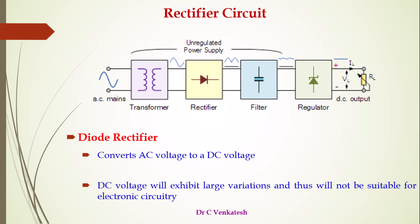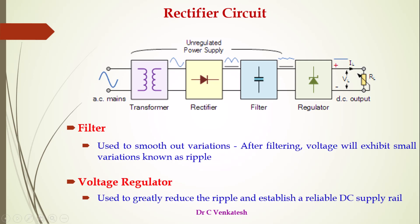That step-down voltage is connected to the rectifier circuit. The rectifier is mainly designed using a diode, and it converts alternating current AC to a DC voltage. The DC voltage will exhibit large variations and thus will not be suitable for electronic circuitry. The rectifier output is given to the filter. In general, a filter is used to remove unwanted things — here the filter is used to smooth out these variations in the rectifier output.